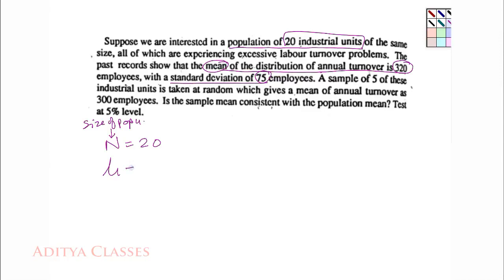So this 320 is hypothesized mean or the population mean μ. And this 75 is standard deviation of population σ, equal to 75.